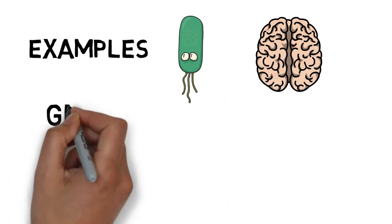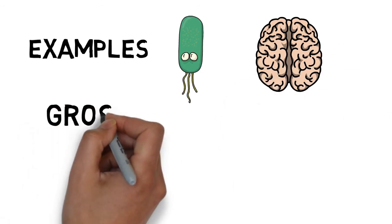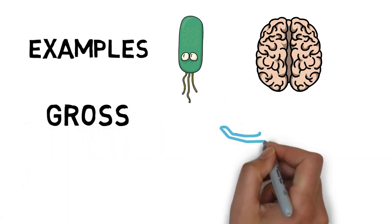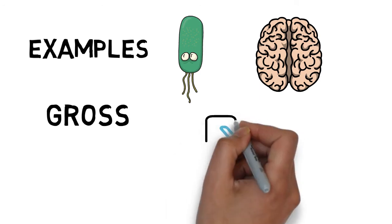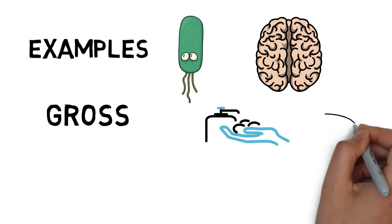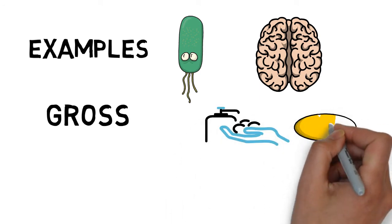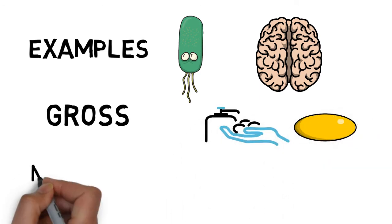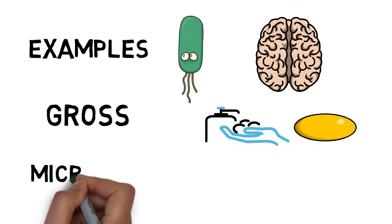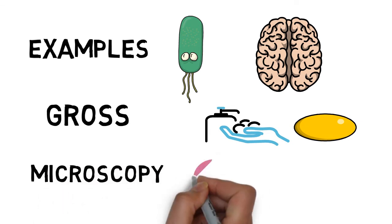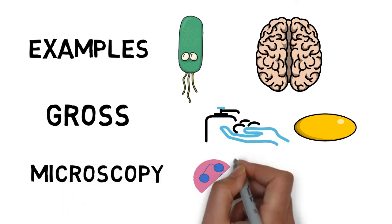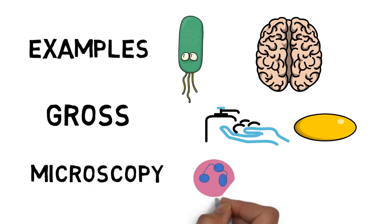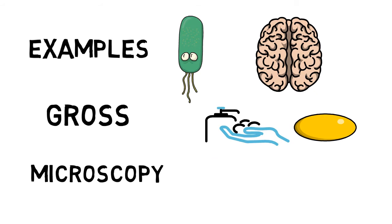Grossly there will be a liquid viscous mass, creamy yellow — also called pus — due to dead leukocytes. Microscopically there will be numerous neutrophils, due to microbes stimulating leukocyte accumulation and enzyme liberation from these leukocytes.